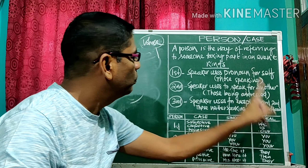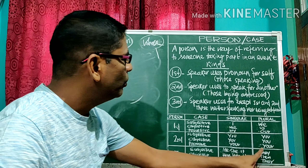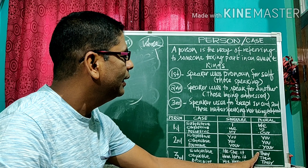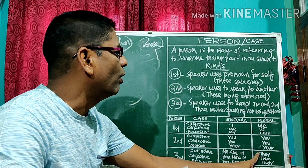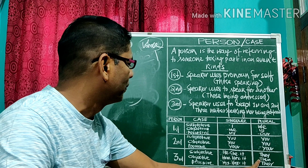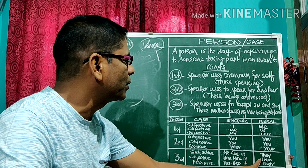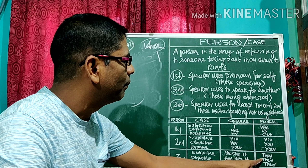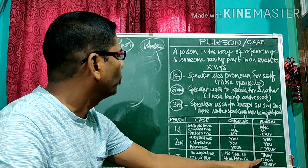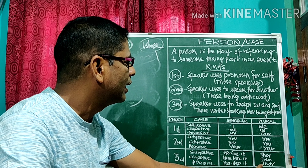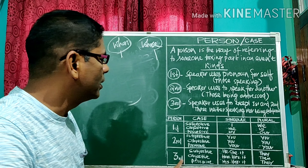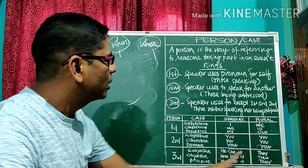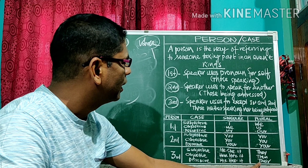In plural for third person: subjective is they — 'They eat a mango.' Objective is them — 'A mango is eaten by them.' And possessive is their. So third person plural: subjective they, objective them, and possessive their.